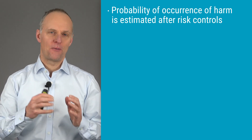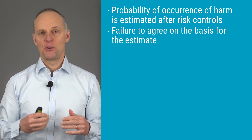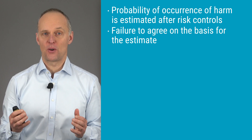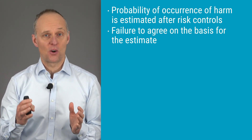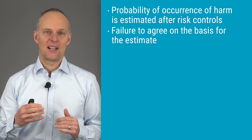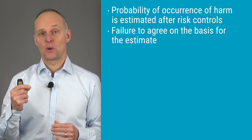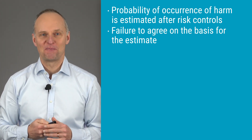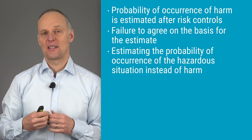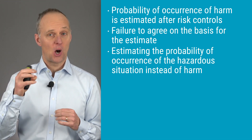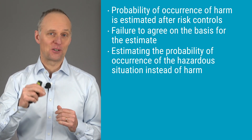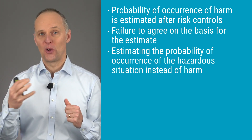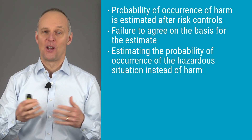Secondly, people don't agree on the basis for the probability of occurrence of harm — one person may think it refers to the probability that harm occurs during one day, a week, or a year, while another thinks it's per use of the device. Team members have to agree on the basis of the probability estimates, otherwise they might argue even though they actually agree. Thirdly, it's quite common that people try to estimate the probability of the hazardous situation instead of the harm. The probability of occurrence of the hazardous situation should normally be referred to as P1, and P1 multiplied by P2 gives the probability of occurrence of harm, or P0.